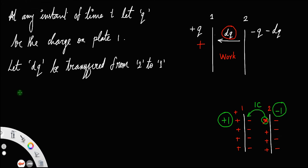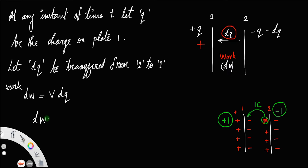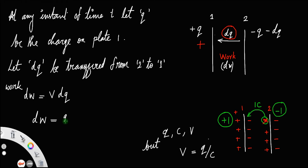Let dW be the small work done. By the definition of work, dW equals the potential of plate 1 multiplied by the charge dq — that is, work equals potential times charge transferred. Using the relationship V = q/C, we can substitute: dW = (q/C) · dq. Let us call this Equation 1.